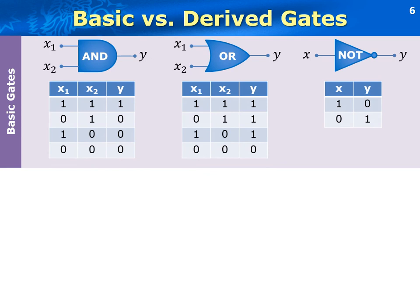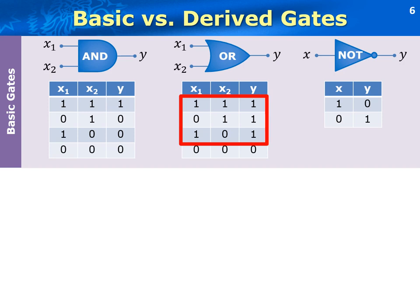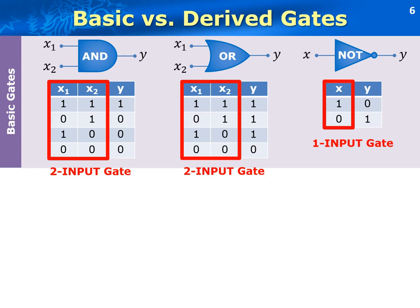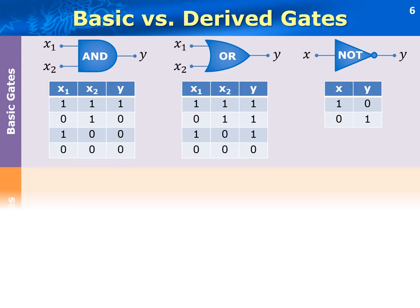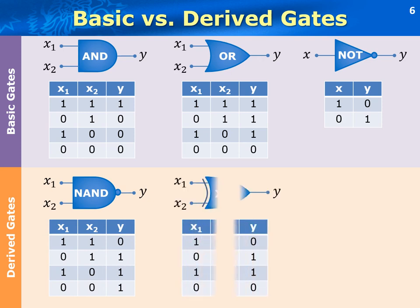For the AND gate, only when all the inputs are 1s is the output 1, otherwise 0. For the OR gate, as long as any input is 1, the output is 1. Unlike AND and OR gates that have two inputs, the NOT gate takes only one input. The output is the complement of the input, which flips 1 to 0 and 0 to 1. Using AND, OR, and NOT gates, other gates can be derived, such as NAND, XOR, and IMPLY.